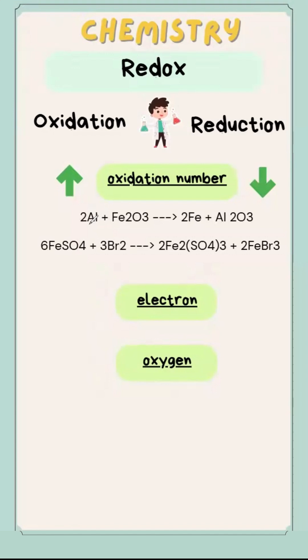For example, here, aluminum initially is atom, so oxidation number is zero. And then, it becomes aluminum oxide, so it will become 3 positive. So, from 0 to 3 positive, this is oxidized because oxidation number increases.